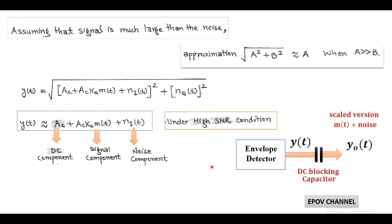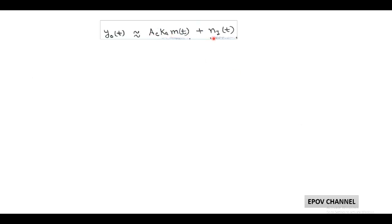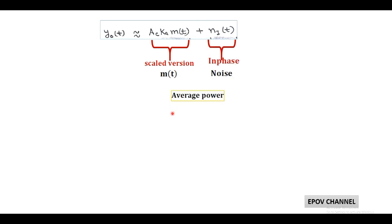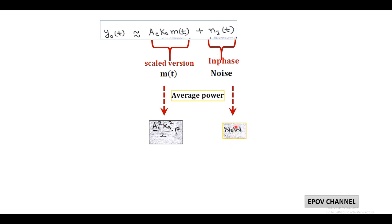Here, the first term is the scaled version of the message signal and the second term is the in-phase noise component. From the first term, the average signal power of the scaled message signal equals AC²·KA²/2 · P, where P is the average power of the message signal. From the second term, the average noise power within message bandwidth W equals N₀·W.